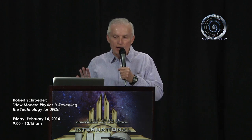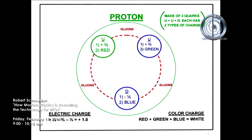The neutron too is made up of quarks, held together by the strong nuclear force. All protons and neutrons have three quarks in them, and the gluons carry what they call color charge between the quarks that hold the nucleus together.